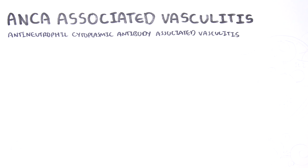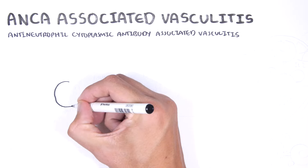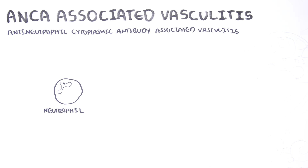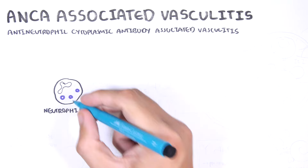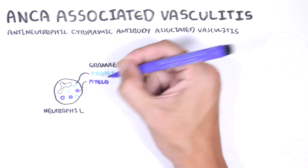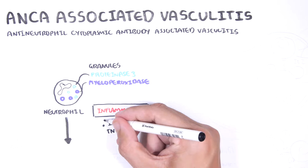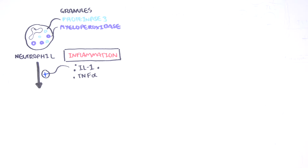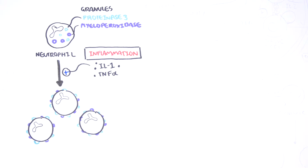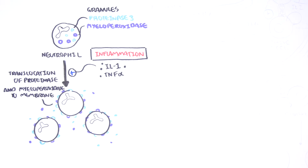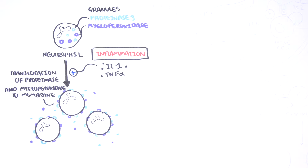The pathophysiology of ANCA-associated vasculitis involves the presence of ANCA and also granulomatosis. ANCA targets certain proteins in the cytoplasmic granules of neutrophils and monocytes. The neutrophils, for example, contain enzymes myeloperoxidase and proteinase-3 in granules. During inflammation, cytokines such as TNF-alpha and interleukin-1 stimulate the translocation of proteinase-3 and myeloperoxidase to the cell membranes, allowing these enzymes to be exposed.